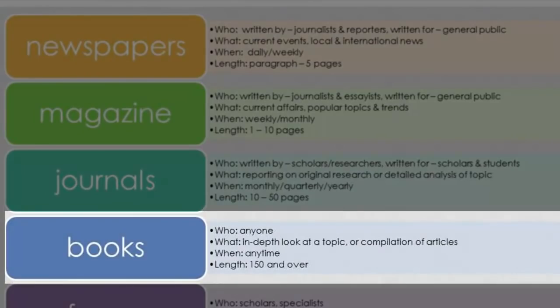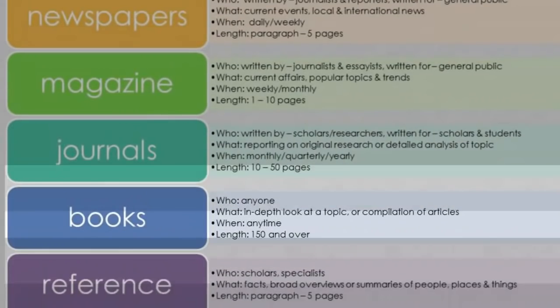Today, with so many self-publishing options available, anyone can write and publish a book, so make sure to look at the author and the publisher. In general, books usually take an in-depth look at a topic, but sometimes they can also be a compilation of articles or essays written by various authors. They can be published months or years after an event has occurred, and are usually one hundred and fifty pages or more.